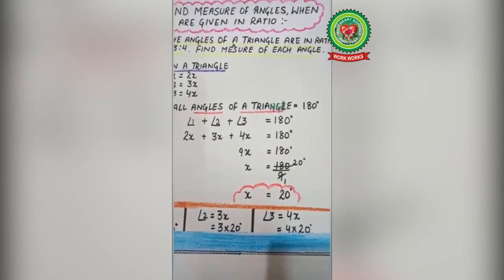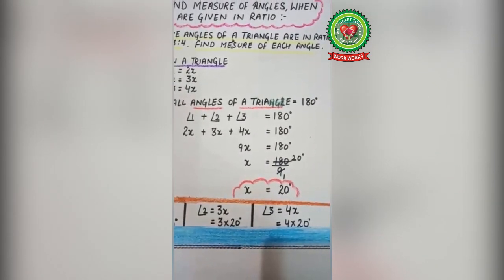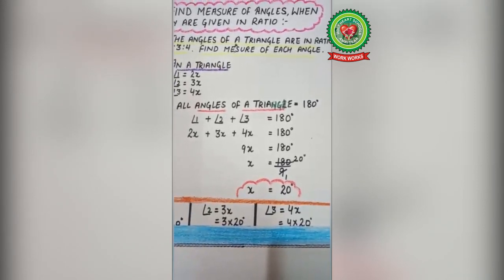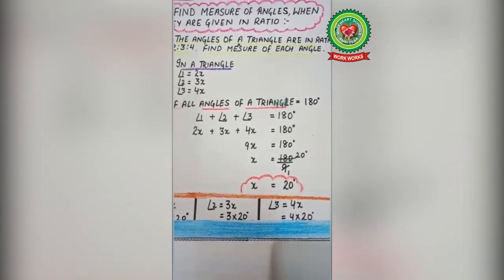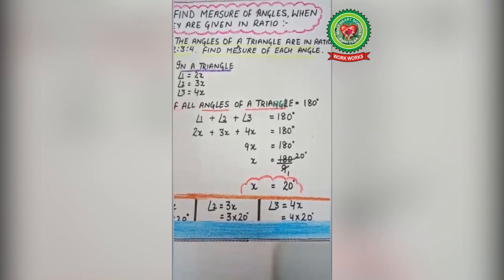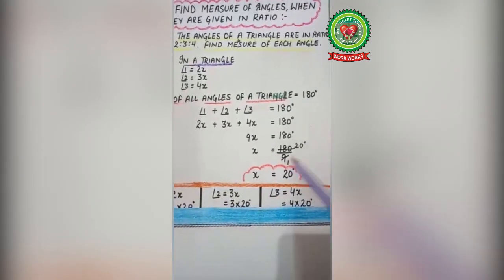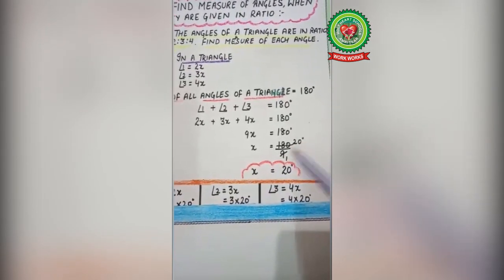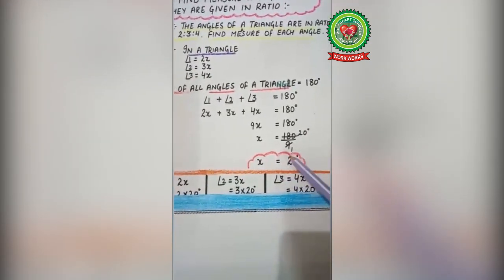Now, 9x means 9 multiplied by x. Whenever there is a multiplication sign and we move that term to the other side, it changes into division. So 9 shifts to the right-hand side and divides 180. From the 9 times table, 180 ÷ 9 = 20. So the value of x = 20 degrees. Note that this is the value of x, not the angles themselves.